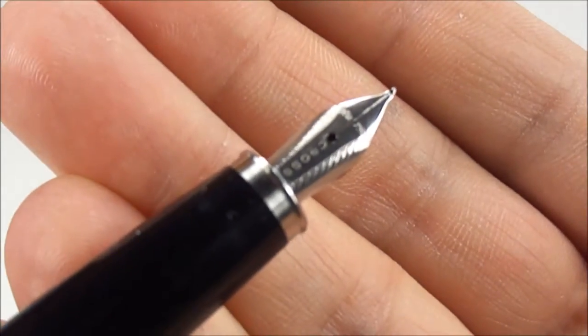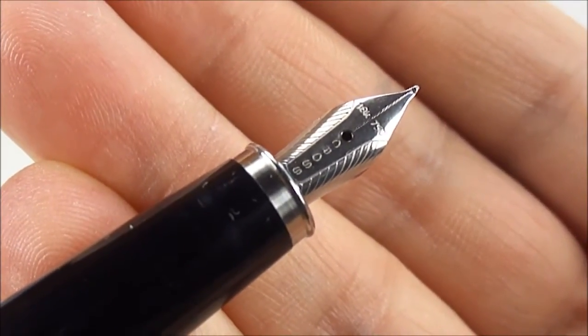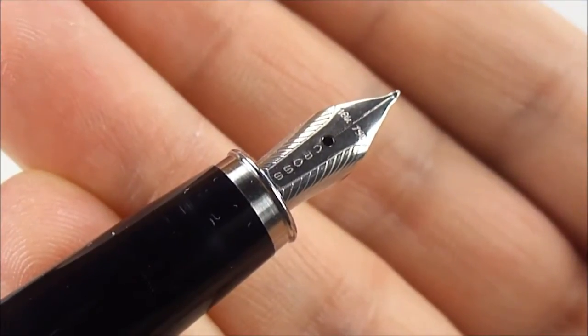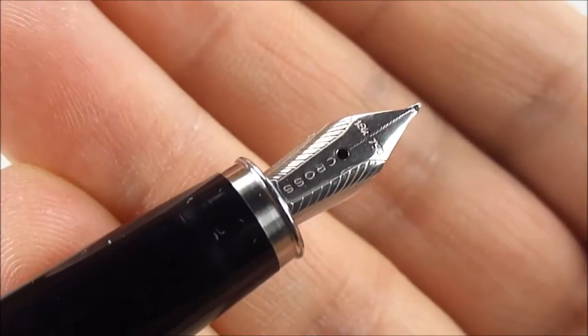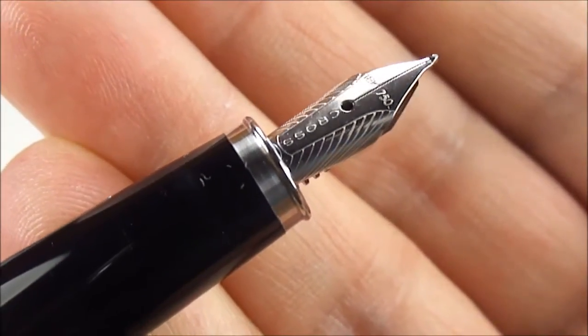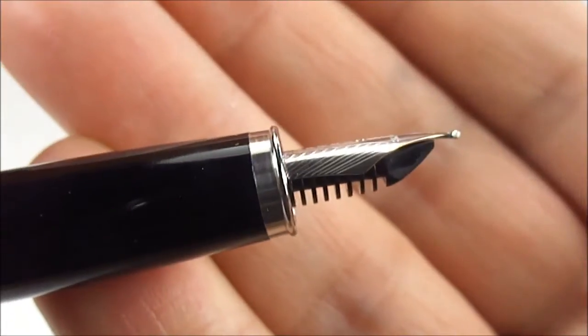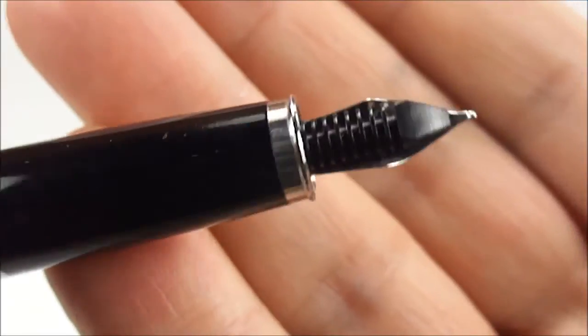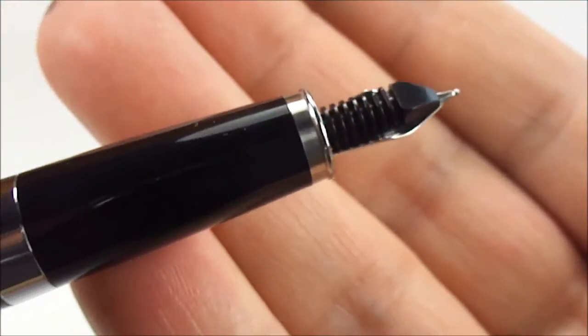Now, if we show you the nib, as you can see there, the nib on this particular one is a rhodium plated 18 carat white gold nib, and you can see it's got the word cross there, and it's got this lovely design to each side. Let's show you the sideways view there, and there you can see the quite recognisable cross feed to the back there.